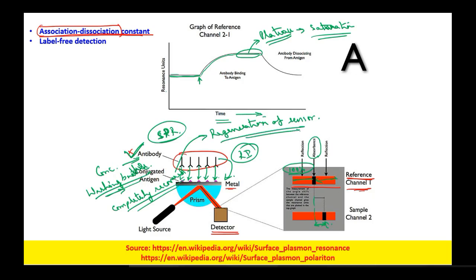After the plateau is reached, the antibodies dissolve from the antigen as we flush the system using washing buffer. The system can be used 25 to 30 times just by regenerating it.